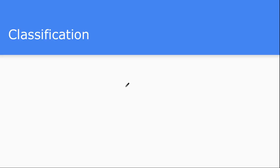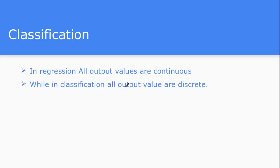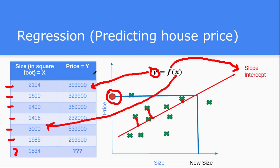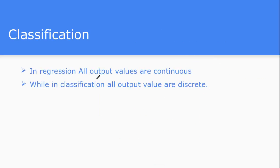Now let's see what is classification — another kind of supervised learning algorithm. In regression, all outputs are continuous — they can be any real number, integer, or float. Classification differs from regression in that its output values are discrete. There is a fixed number of output classes — it could be 2, 5, 7, 10, or even 1000 classes. It holds all the properties of supervised learning; the only difference is this discrete output.